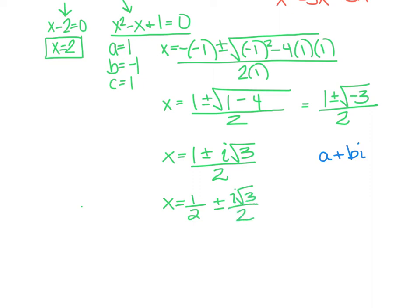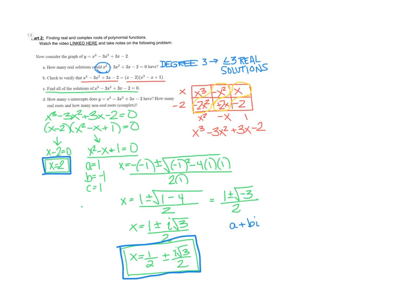And this actually gives us two complex roots. One half plus i root 3 over 2, and one half minus i root 3 over 2. So we can see that we did in fact find three zeros or three roots. One of them is real. We have one real root, and that was at x equals 2. And we have two complex roots.